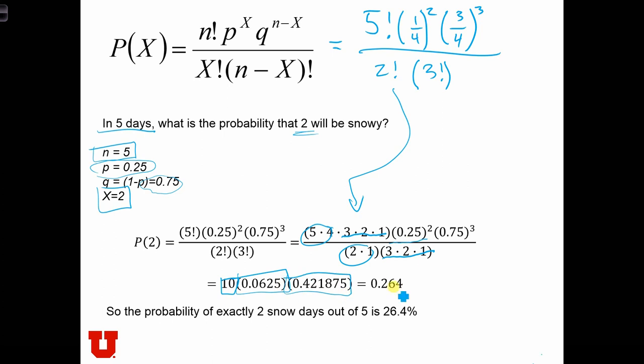And when we multiply it all together, we get the probability to be 26.4%. So if the probability of snow is 25% on any given day, then the probability of having exactly 2 snow days in the next 5 days is 26.4%.